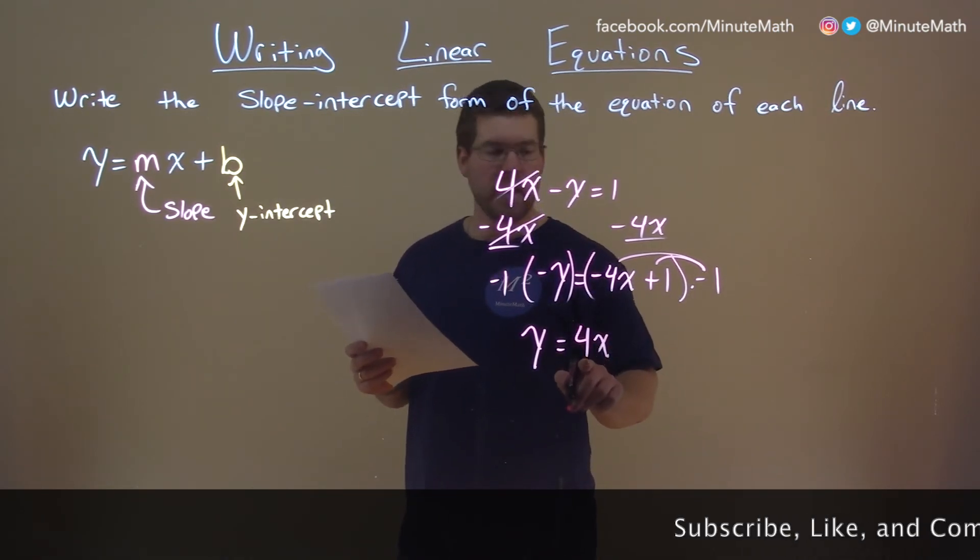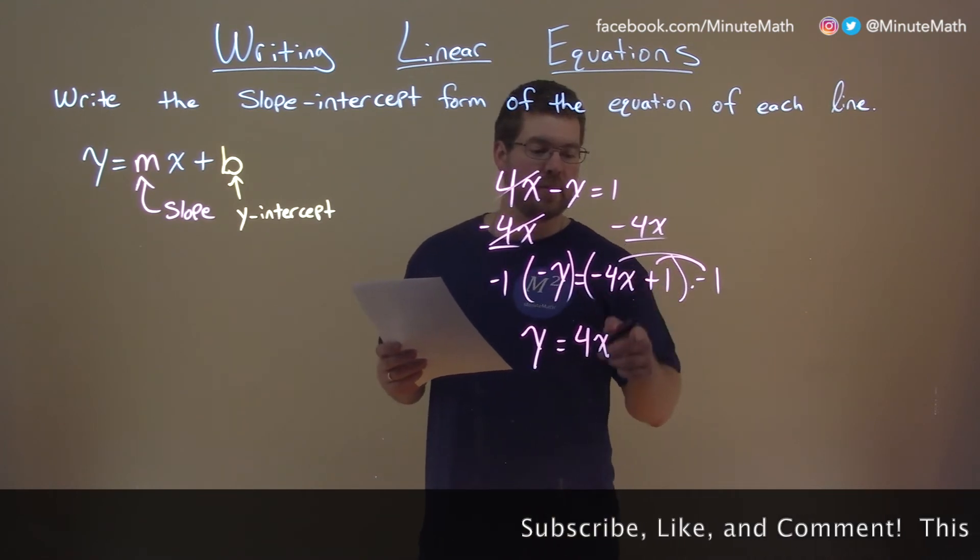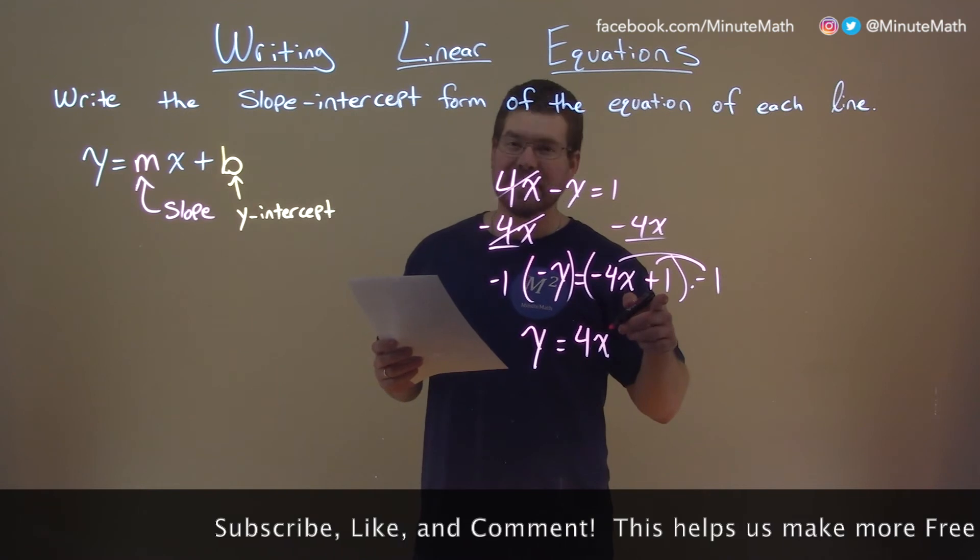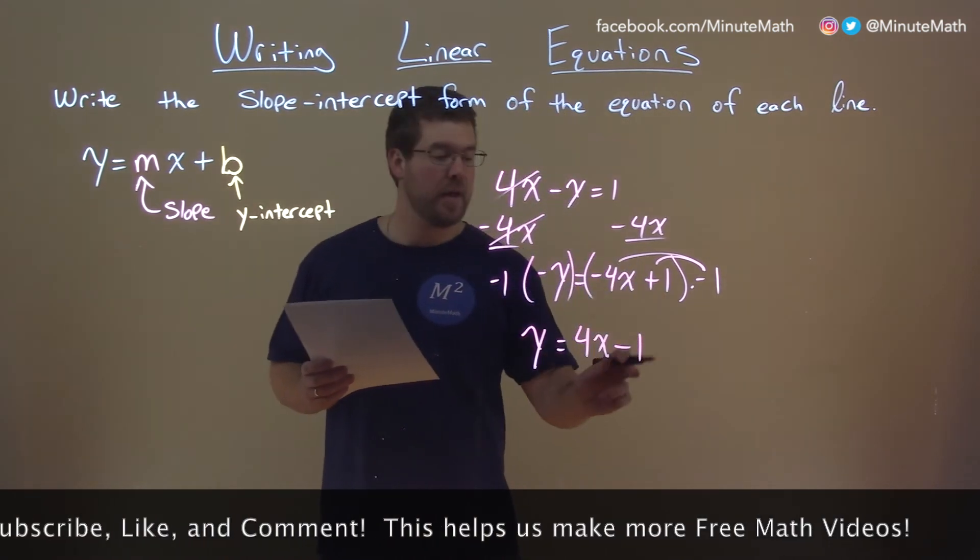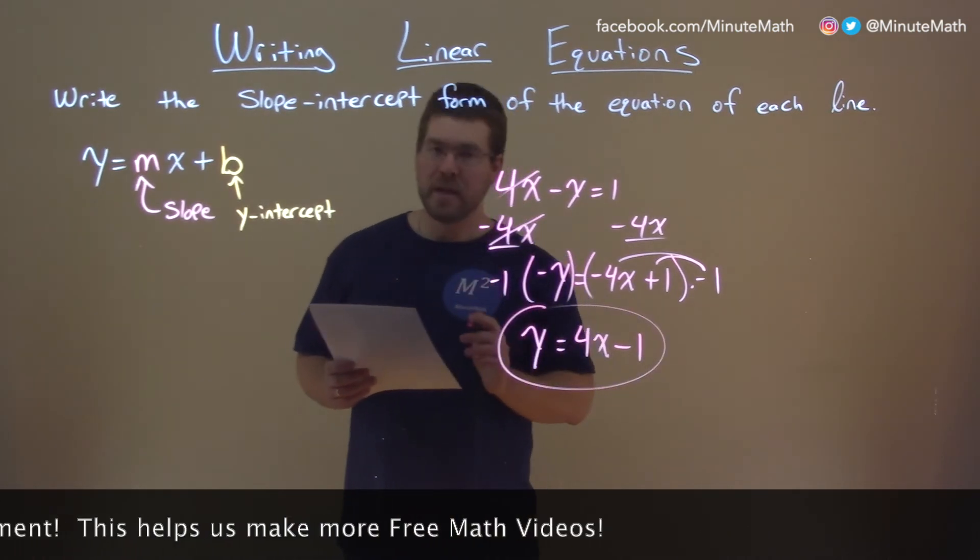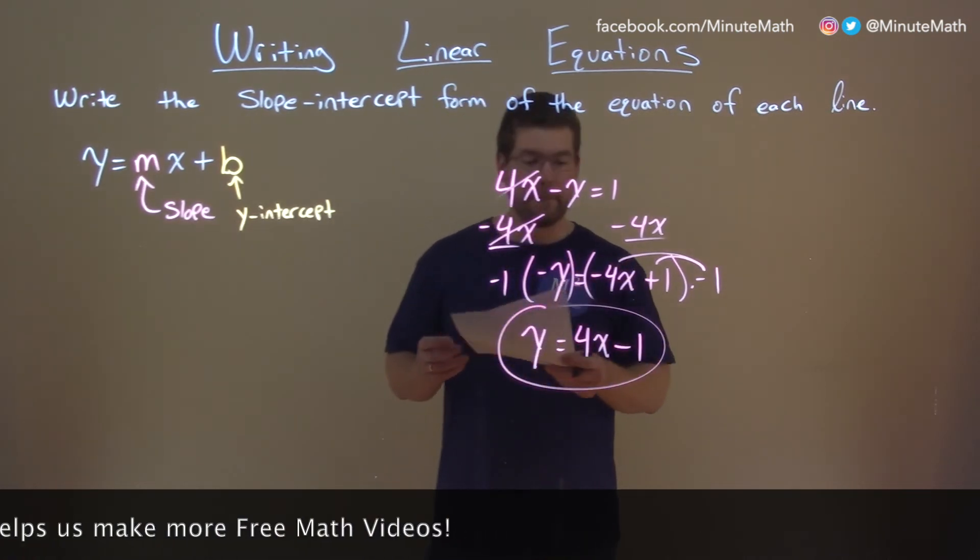Positive 4 is our slope. And be careful, a lot of students stop and just bring down the plus 1. Negative 1 times positive 1 is a negative 1. We subtract that 1 there. Negative 1 is our y-intercept, and there we have our answer, y equals 4x minus 1.